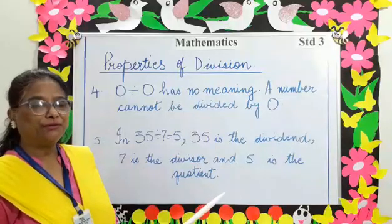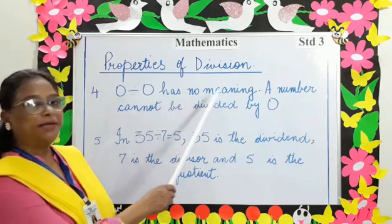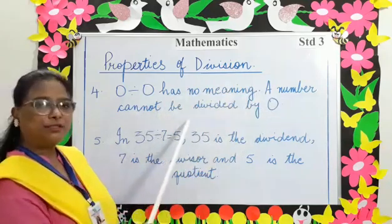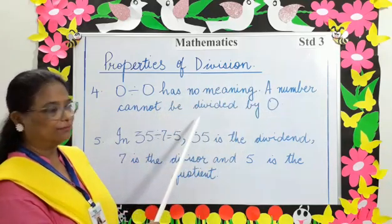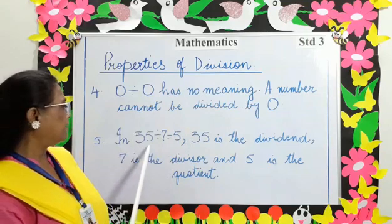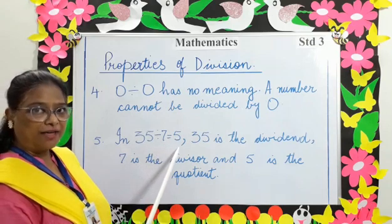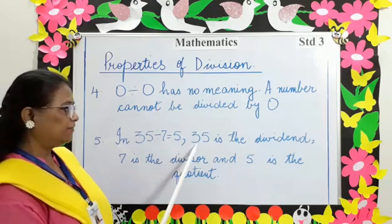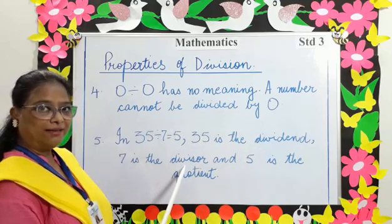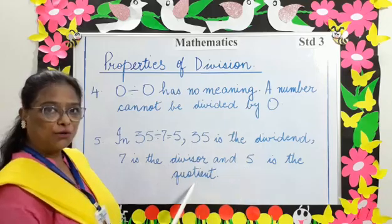Property number 4: A number cannot be divided by 0. Property number 5: In 35 divided by 7 equals 5, 35 is the dividend, 7 is the divisor, and 5 is the quotient.